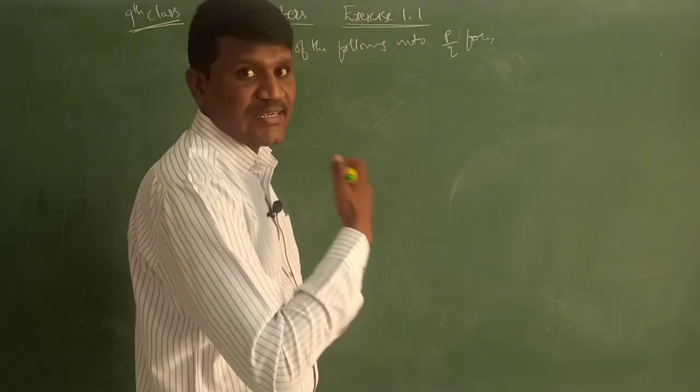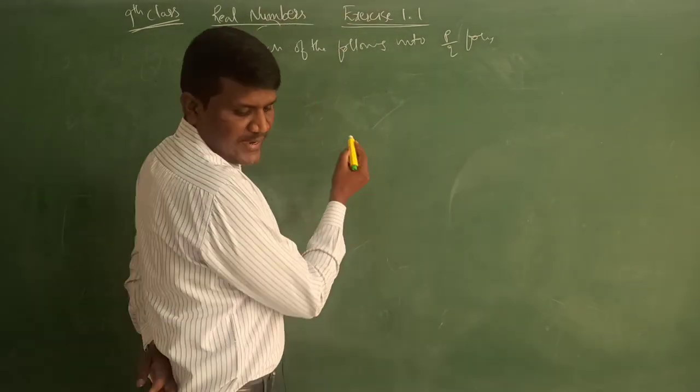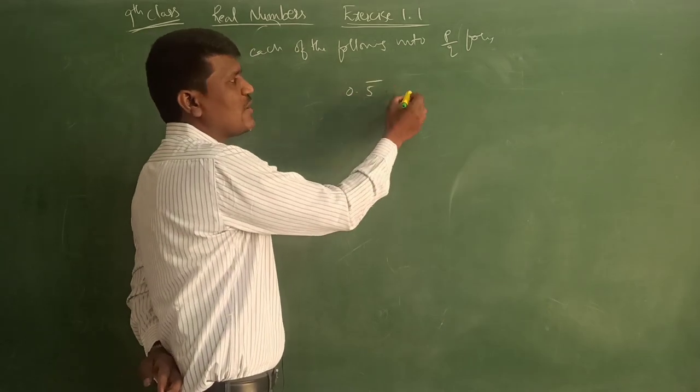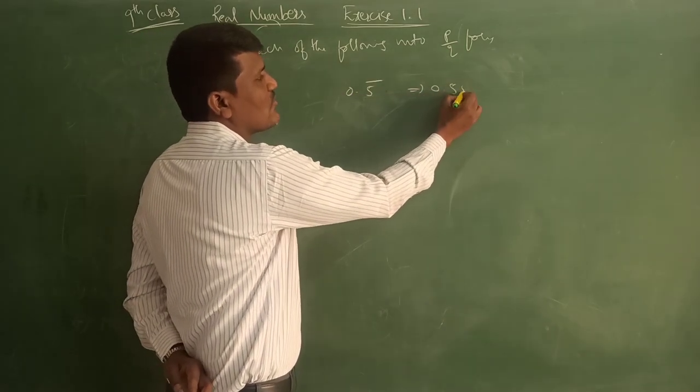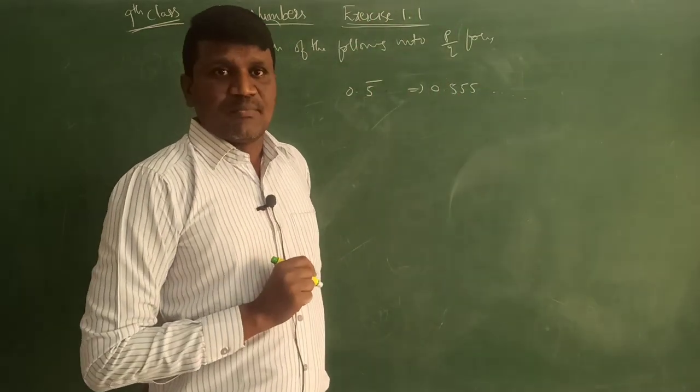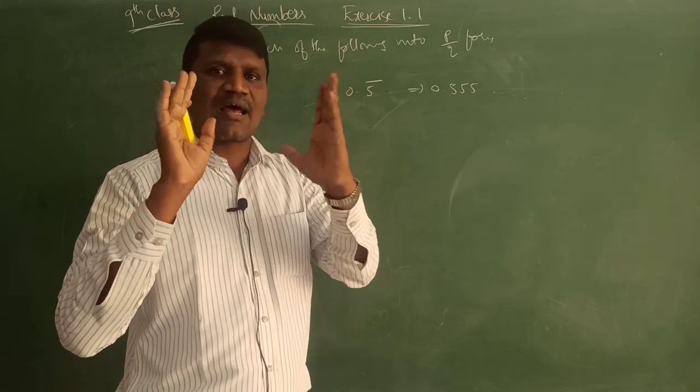Now I am going to explain the shortest one, short form. Directly by seeing 0.5 bar. 0.5 bar means 0.555... This is a non-terminating decimal. 0.5 bar, this is how we'll write it.